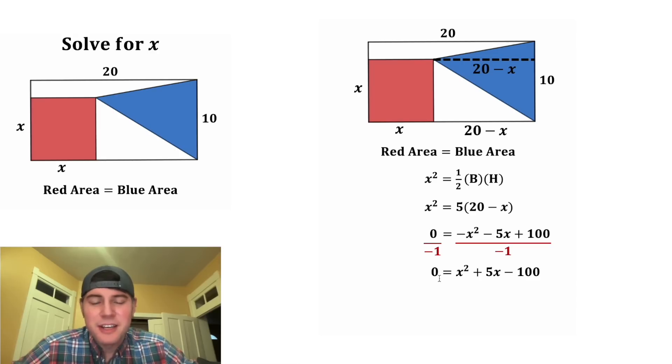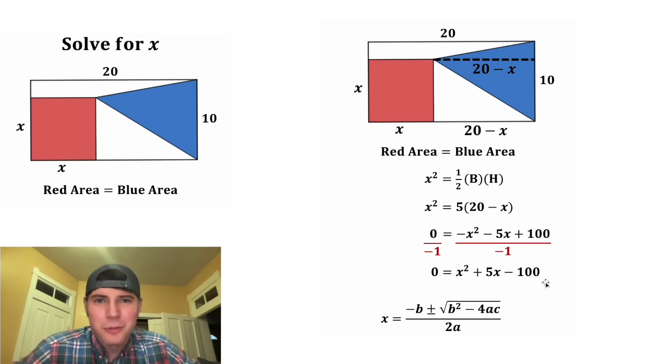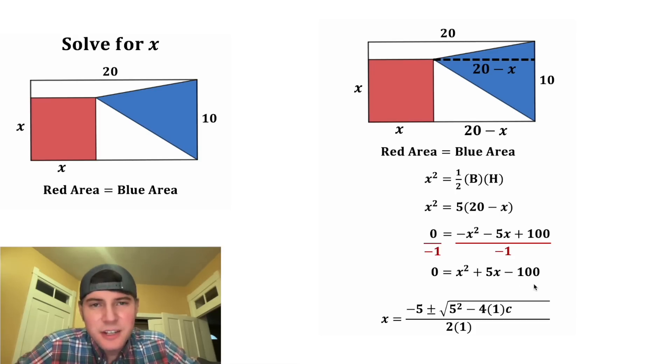Well, this is a quadratic set equal to zero. I don't see an easy way to factor it, so let's use the quadratic formula. The leading coefficient is a 1, so in the place of this A, we can plug in 1. And in the place of this A, we can plug in 1. And then B is equal to 5, so we can plug in 5 for this B and 5 for this B. And last, the C is equal to negative 100, so we can plug in negative 100 for C.